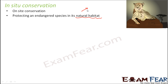Within a protected area there are many restrictions. Human beings are not allowed to cut down trees, they are not allowed to hunt animals — whether big or small — and they are not supposed to poach animals. With these restrictions in place, we are able to protect the endangered species living within that area.